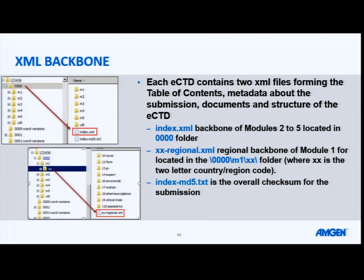These XML files will be present in the bottom of your sequence folder. There's the index XML — this is your backbone table of contents for modules 2 to 5. The XX in the filename is usually replaced with the initials of the country you are submitting to, so for Australia that's AU, EU and so on. This will be your regional backbone of module 1 and is located in your module 1 folder.